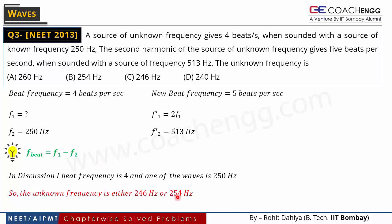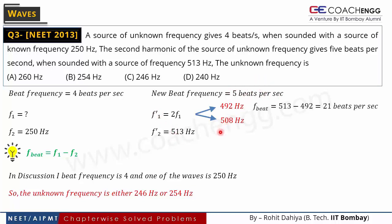So f1 could be 254 Hz or 246 Hz — both have a difference of 4 with 250 Hz. Now using the second data: if f1 = 246 Hz, then 2f1 = 492 Hz; if f1 = 254 Hz, then 2f1 = 508 Hz. The second wave is 513 Hz. In the first case: 513 − 492 = 21 beats per second — that is the wrong answer.